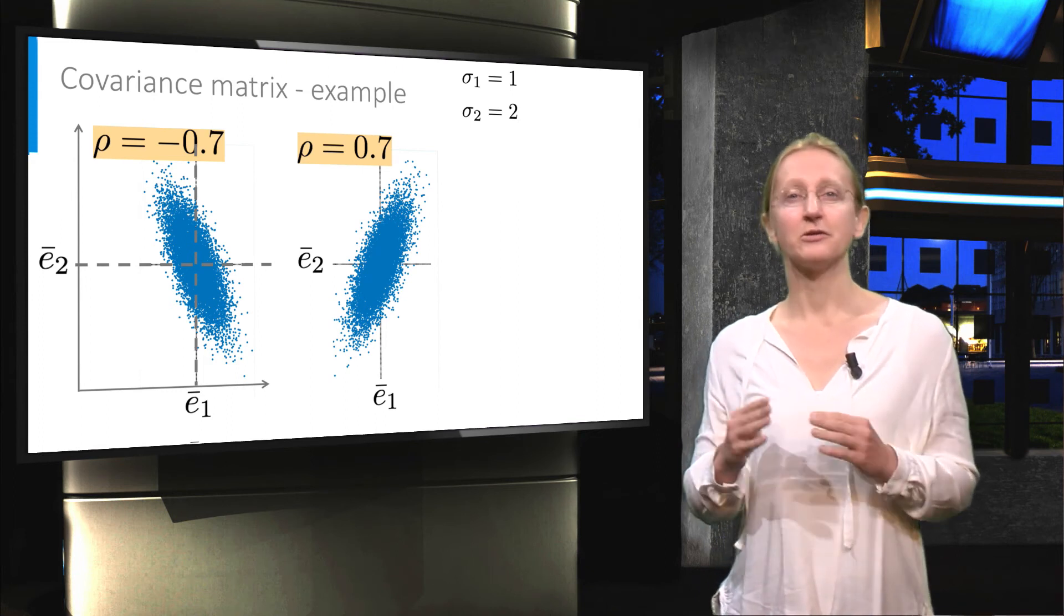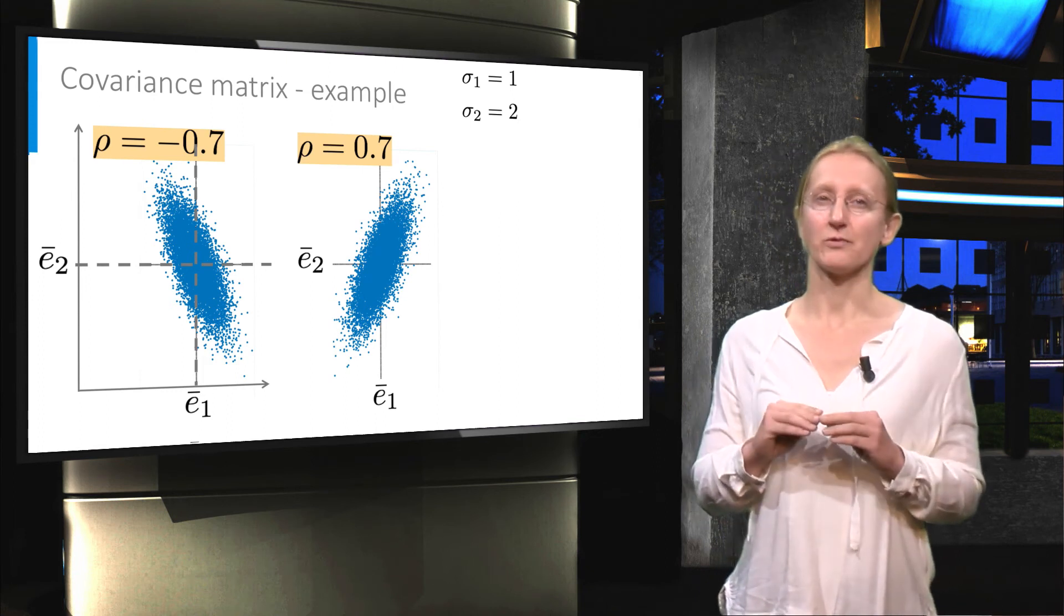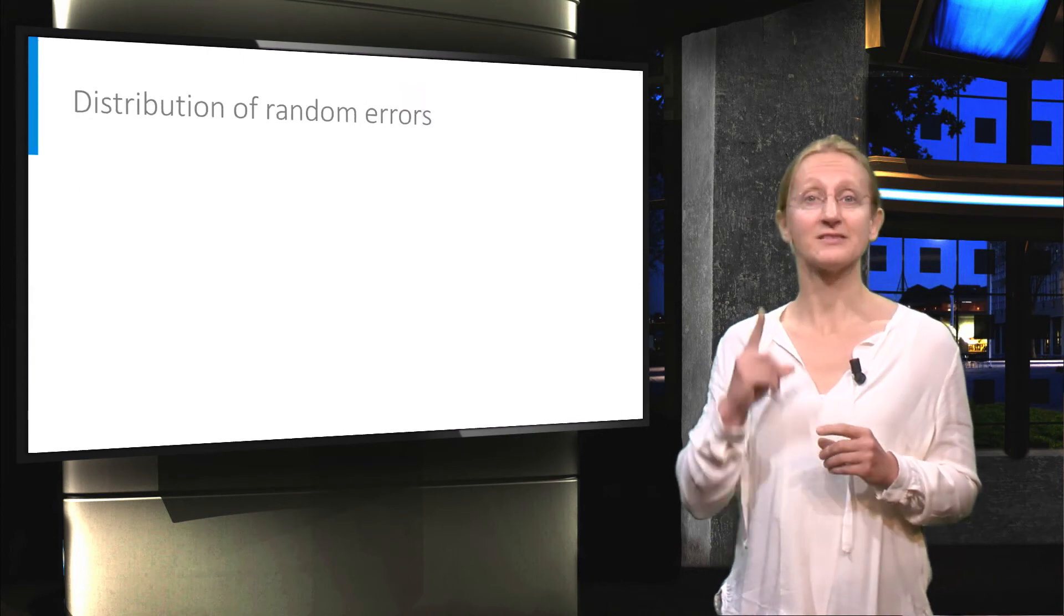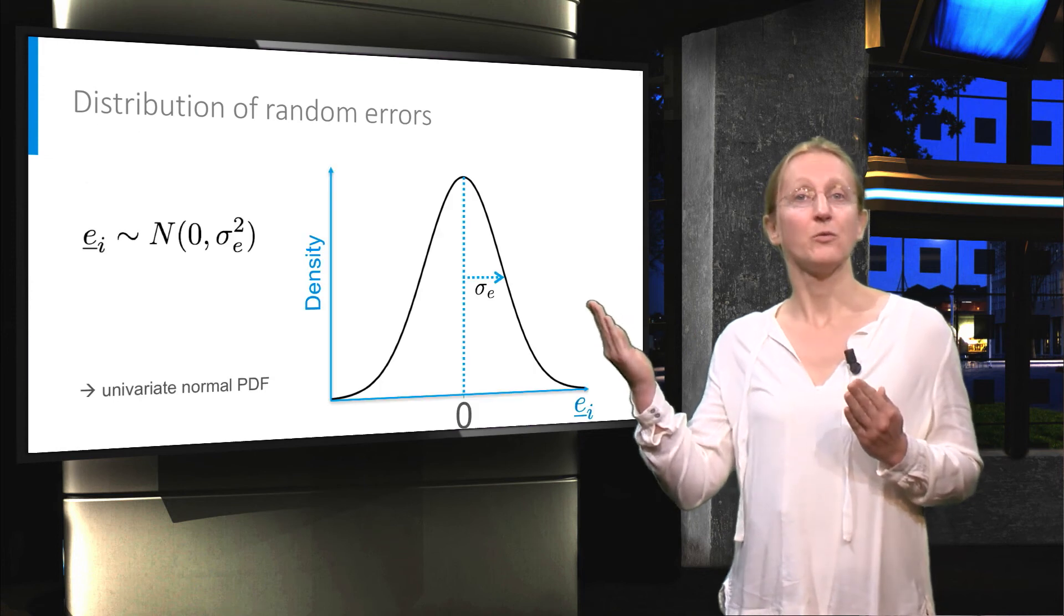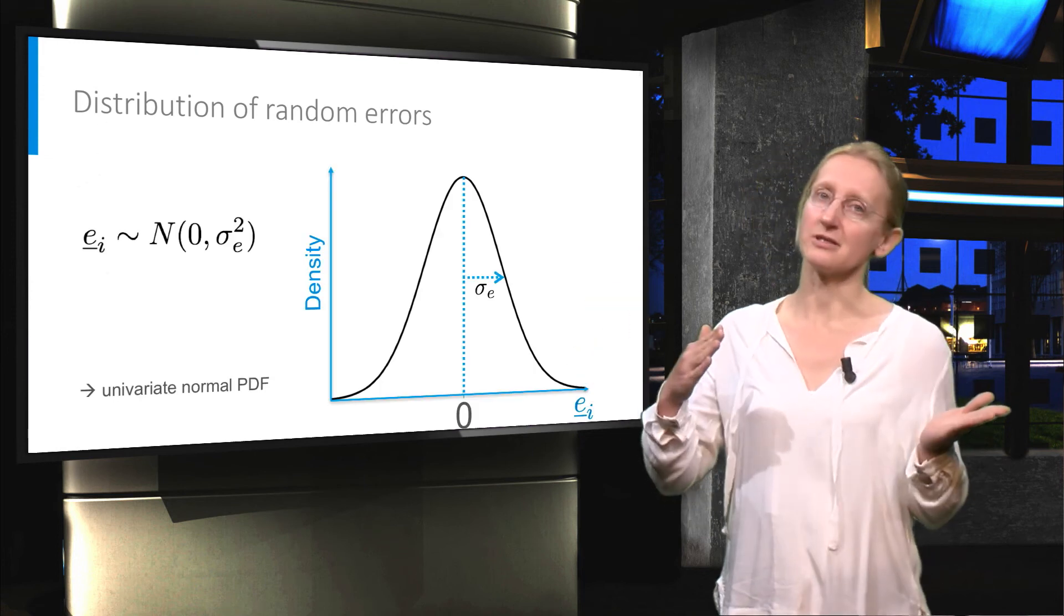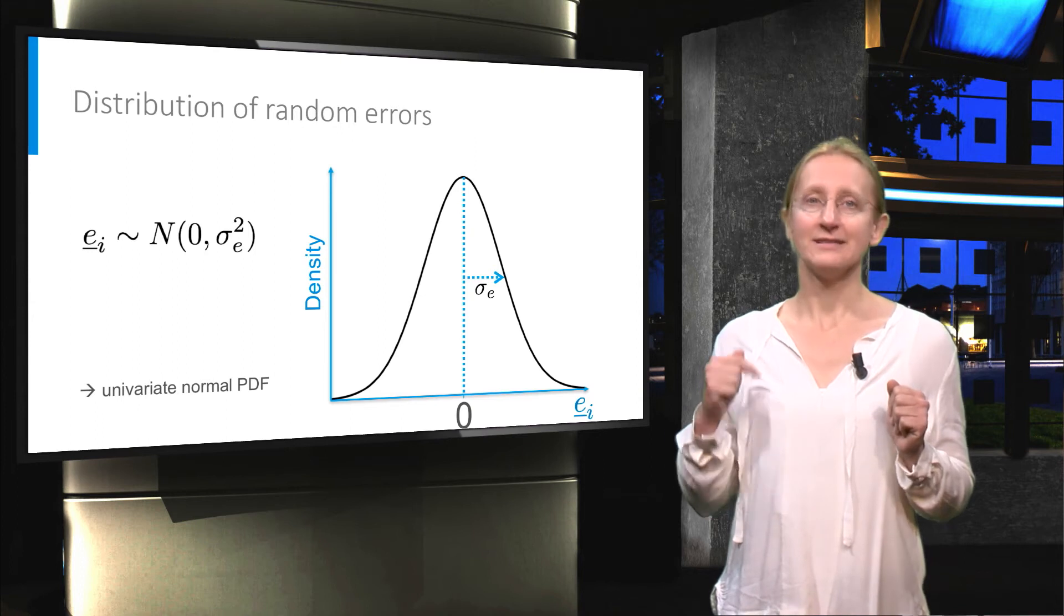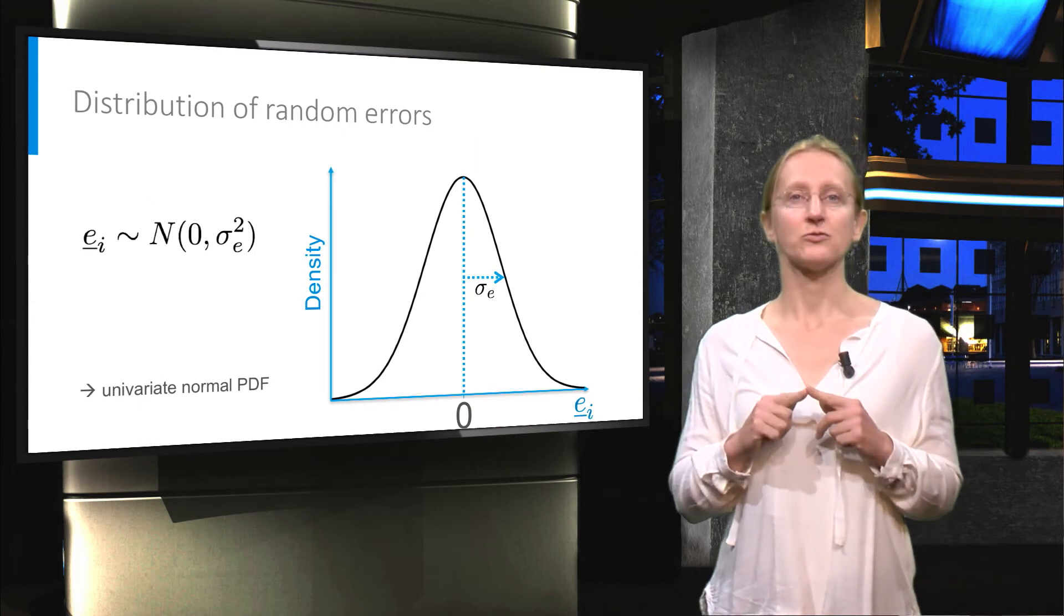Now let's look at the distribution of the random errors. As we saw before, a single random error follows the normal distribution, with mean 0 and a certain standard deviation. This is the univariate normal distribution.